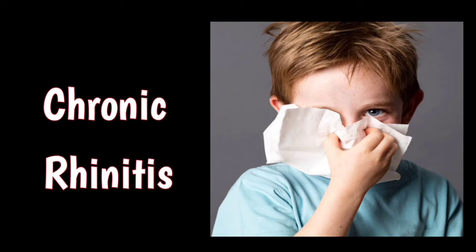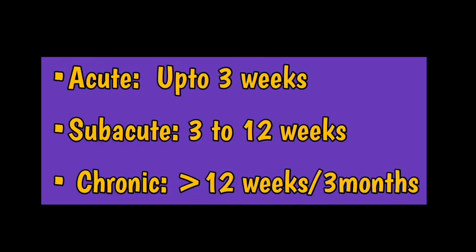In this video we are mainly going to talk about chronic simple type of rhinitis. But before that, you must need to know that a condition is called acute when it is of up to 3 weeks in duration, sub-acute when it is of 3 to 12 weeks in duration, and it will become chronic if it lasts for more than 12 weeks or 3 months.